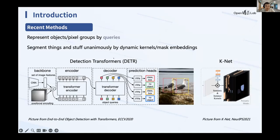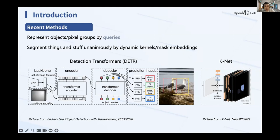More recent methods explore transformers for object detection. The key idea is to represent each object by queries — the CNN extracts features, the transformer encoder enhances them, and the transformer decoder performs a set operation where each query represents an object for classification and bounding box regression. This idea extends to instance segmentation and panoptic segmentation, segmenting things and stuff using dynamic kernels or mask embeddings from queries.